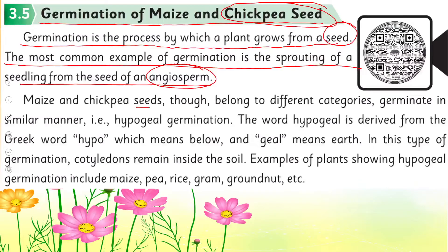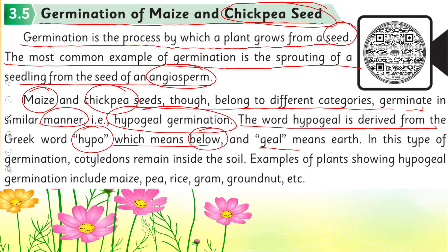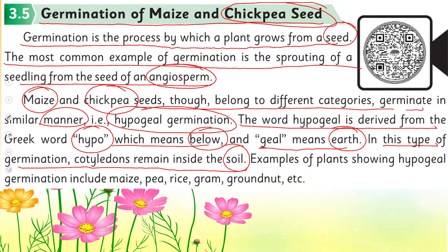Maize and chickpea seeds belong to different categories but germinate in a similar manner. Maize is a monocot and chickpea is a dicot, but both undergo hypogeal germination. The word hypogeal is derived from the Greek word 'hypo' meaning below, and 'geo' meaning earth — so below the earth. In this type of germination, cotyledons remain inside the soil. Some dicots have epigeal germination where the cotyledon comes above the soil, like bean seeds.